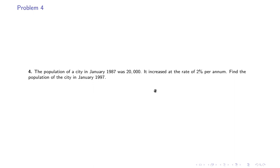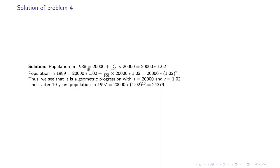The fourth problem: the population of a city in January 1987 was 20,000, increasing at 2% per annum. Find the population in January 1997. Population in 1988 = 20,000 × 1.02, and in 1989 = 20,000 × 1.02². This is a GP with a = 20,000 and r = 1.02. After 10 years, population in 1997 = 20,000 × 1.02^10 ≈ 24,379.